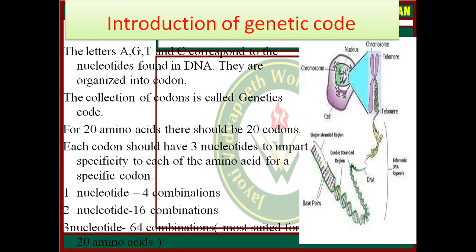For one nucleotide there are 4 combinations; for 2 nucleotides, 16 combinations; for 3 nucleotides, 64 combinations.